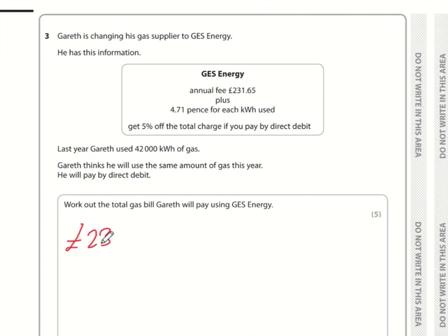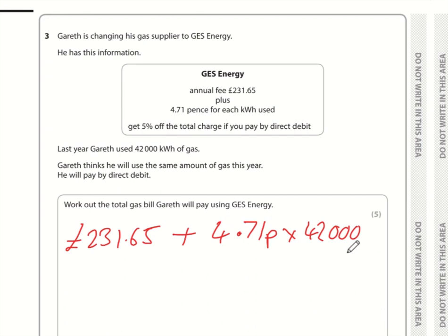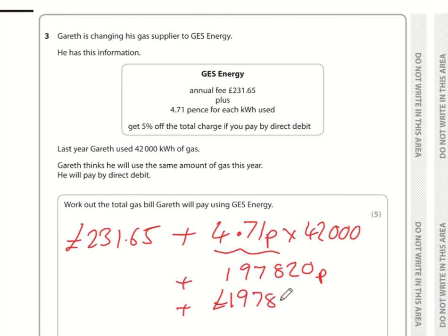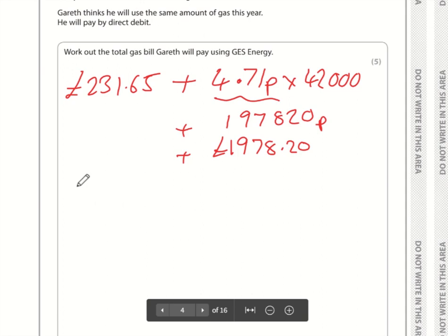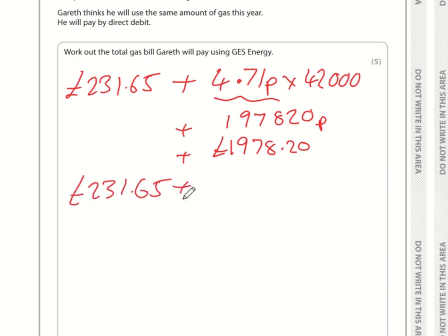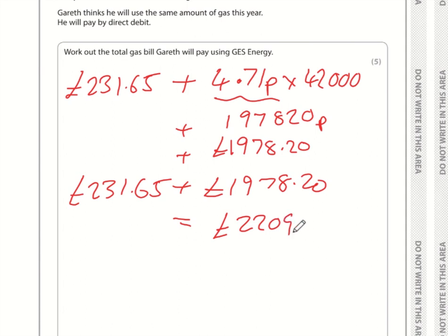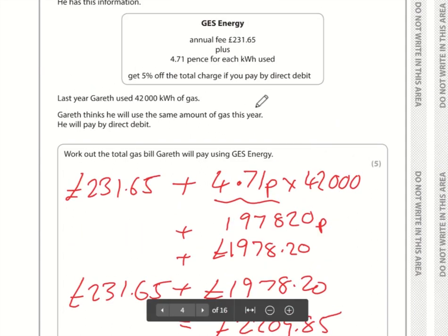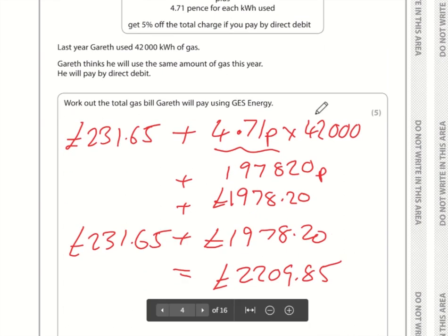Question three: the annual fee is £231.65 plus 4.71p per kilowatt hour. He's using 42,000 kilowatt hours. Since this is in pence: 4.71 times 42,000 equals 197,820 pence. Converting to pounds by dividing by 100 gives £1,978.20. Adding the annual fee: 231.65 plus 1,978.20 equals £2,209.85.